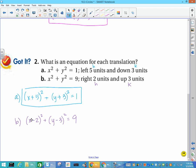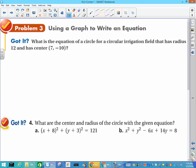What is the equation of a circle for a circular irrigation field that has a radius of 12 and a center of (7, -10)? Nothing's changed. This is my h, this is my k, so (x - 7)² + (y + 10)² = 144.